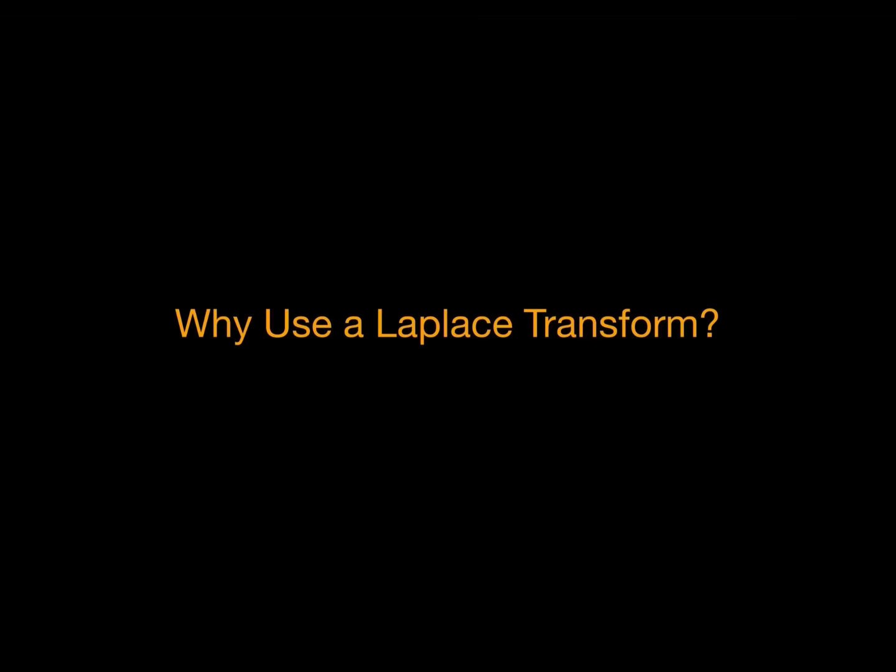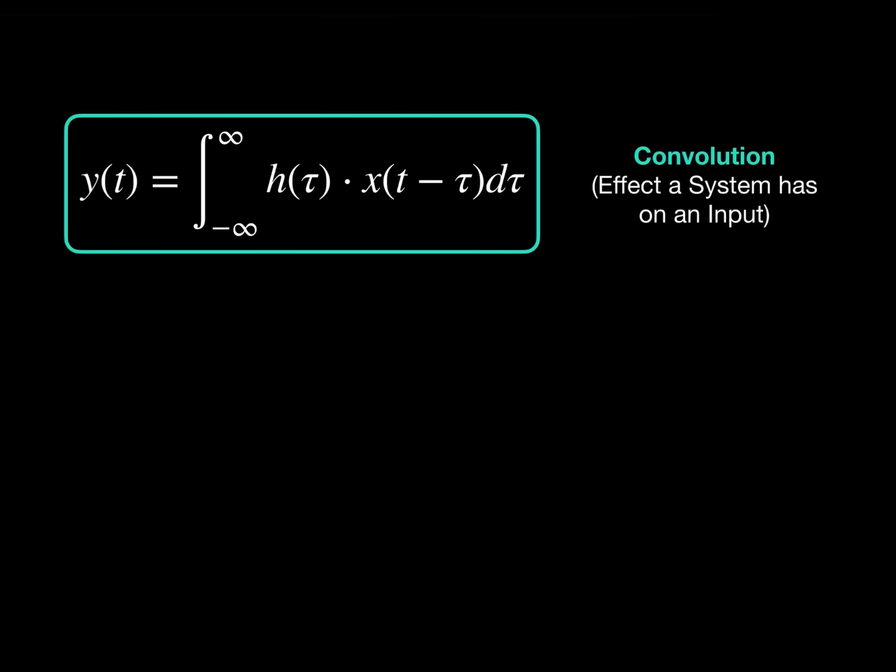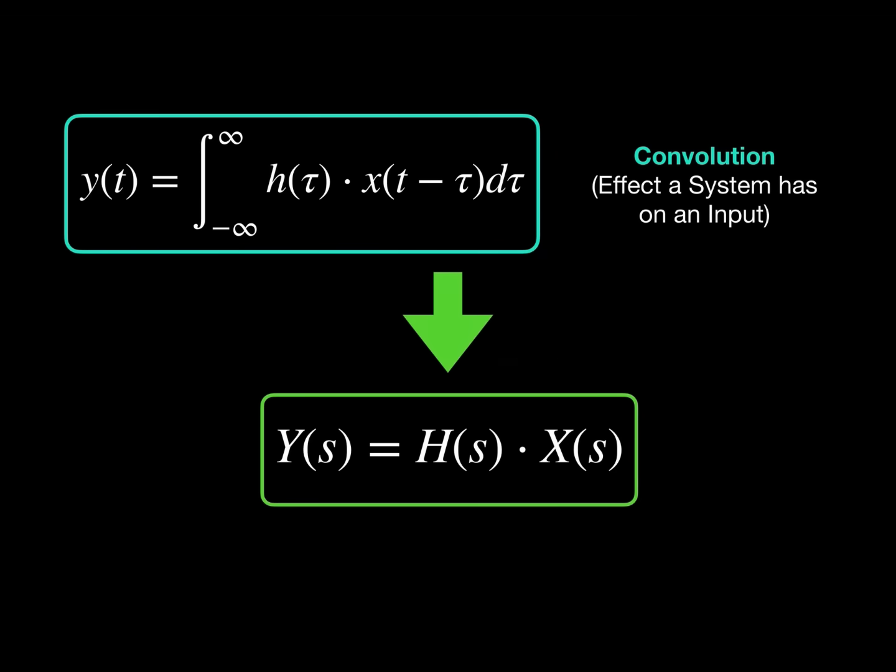So why use a Laplace transform? We consider a transfer function as a block. In the time domain, the effect that a system has on an input is represented by a mathematical convolution. However, when taken into the Laplace domain, this tricky convolution becomes a multiplication of transfer functions. This allows controllers and multiple systems to be connected together, with stability much easier to analyze as the combined transfer function can be found from multiplications and a few simple rules.